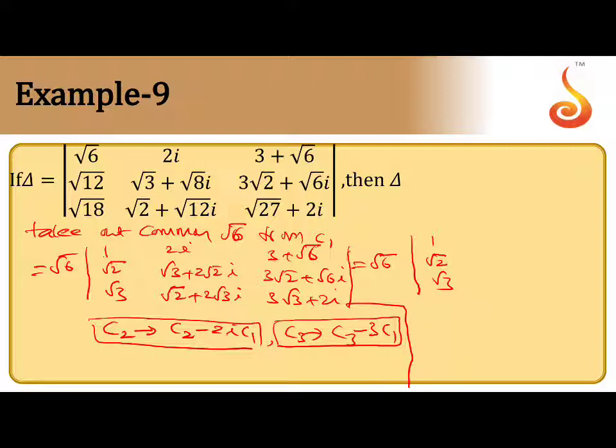Next, second column. C2 - 2i·C1: here 2i is already there, 2i multiplied by C1 and subtract, 2i cancels, you get 0. Next, 2i√3 + 2√2i - 2i·√2, 2i√2 cancels, you will get √3. Next, 2√3i cancels, you will get √2.